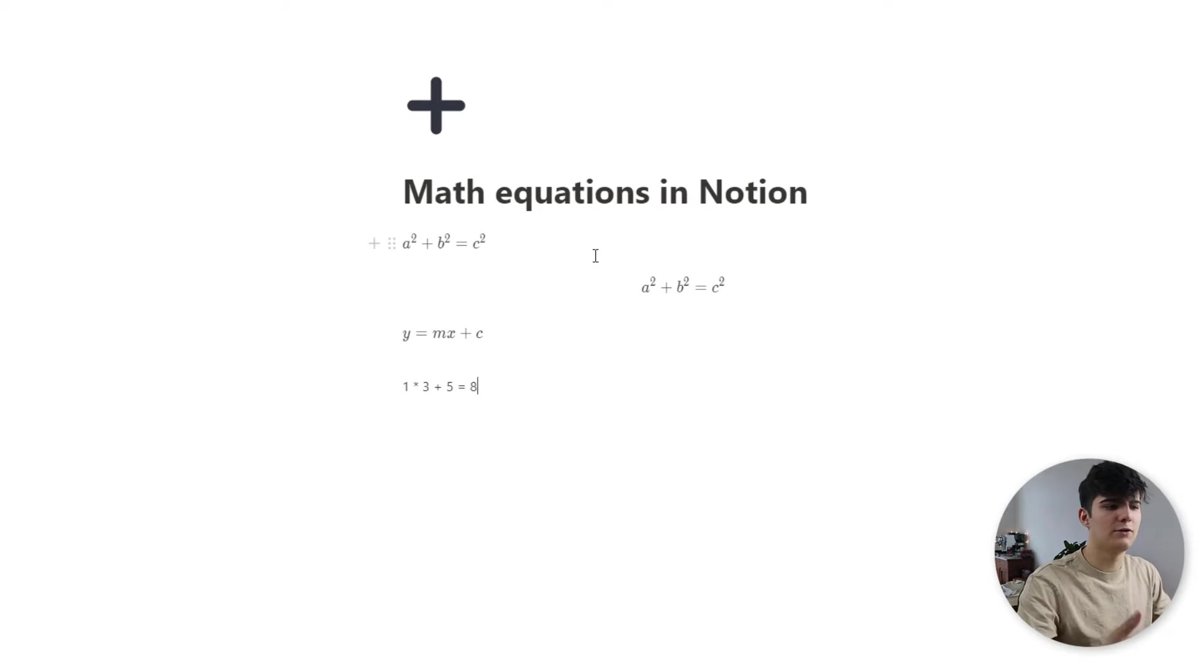The same actually works if you have already typed out the equation in a normal text format. Then you can just highlight the part of the page that you want to turn into an equation. And then again, just click ctrl shift e and this turns the whole thing into an actual equation. Just click on done and you see it has turned into an equation.